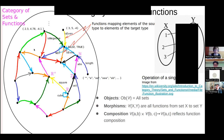In the category of sets and functions, we're dealing with functions as defined in mathematics. Every function from one set to another set is a morphism. That's right — every function from one set to another is a morphism in this category.